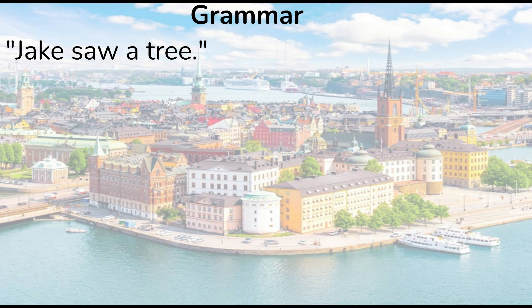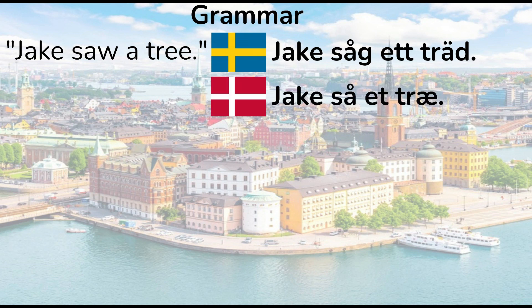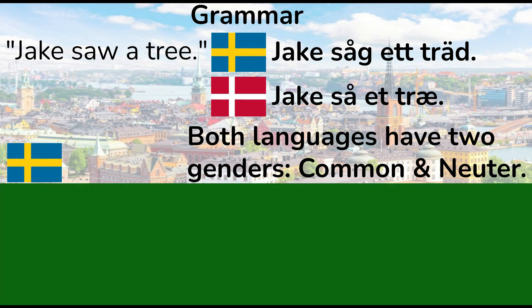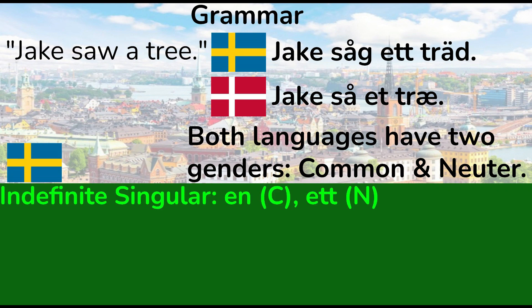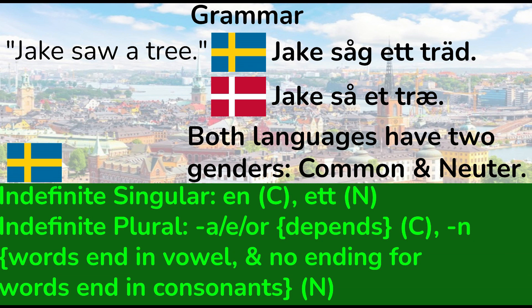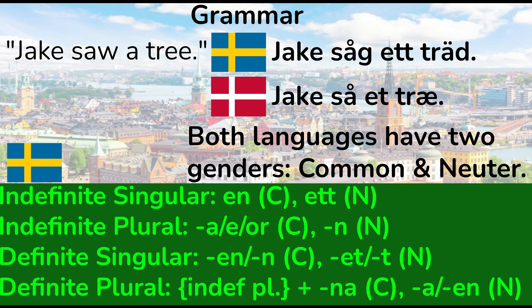Grammar. Let's take a simple sentence meaning 'Jake saw a tree' — in Swedish and in Danish. In both languages, they have two genders: common and neuter. In Swedish, the indefinite articles are 'n' for common nouns and 'x' for neuter nouns. In the plural, it's 'ar', 'er', or 'or' for common gender nouns, and either 'n' for words ending in a vowel or no ending for words ending in consonants in the neuter. In the definite, it's either 'n' or 'n' for common gender, and 'x' or 't' in the neuter. For the definite plural, the suffix 'na' attaches to the indefinite plural for common nouns, then you add 'a' or 'n' for neuter nouns depending on the noun class.